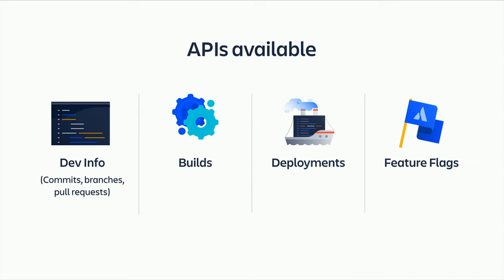Lastly, once you've deployed your software — specifically in the cloud or on mobile — you have feature flags that make that software available to end users. We have an API specifically for tracking the status of a feature flag: how it's been rolled out to which cohorts and at what percentage. That's for tools like LaunchDarkly, RollOut, or Optimizely.